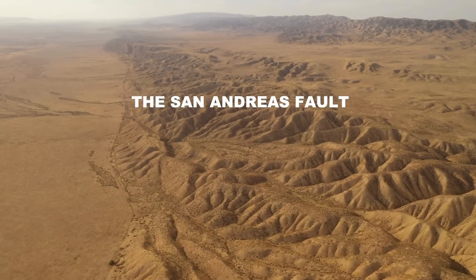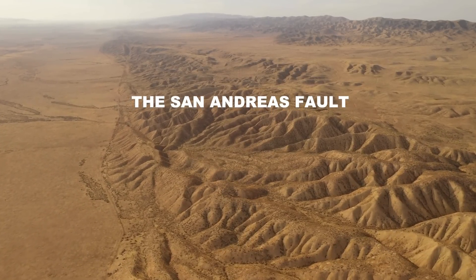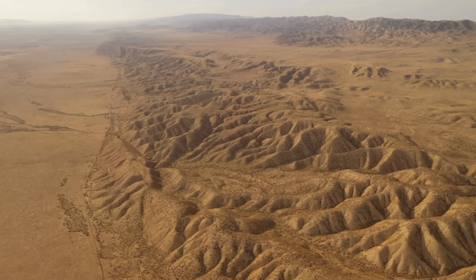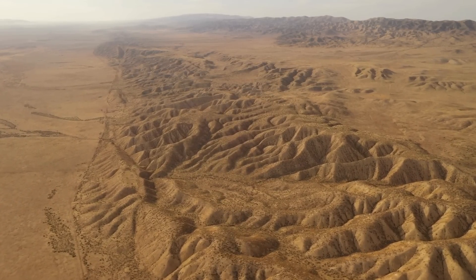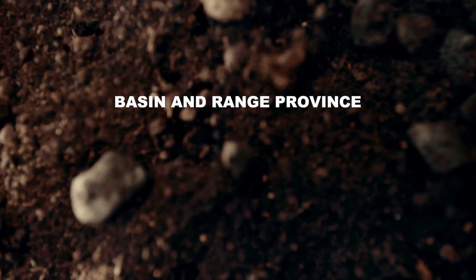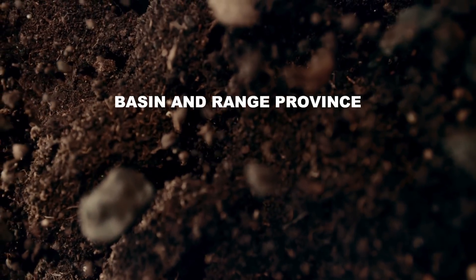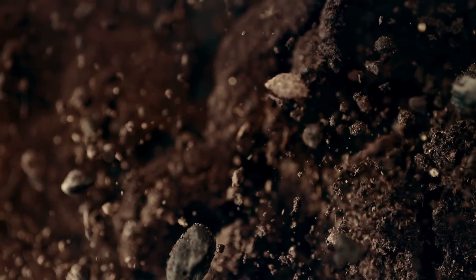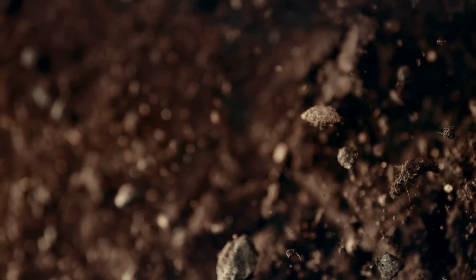The San Andreas Fault, which runs parallel to the California coast, is a major strike-slip fault capable of generating large earthquakes up to magnitude 8.0. Further inland, the basin and range province is characterized by a network of normal faults, formed by the stretching and thinning of the Earth's crust in this tectonically active area.